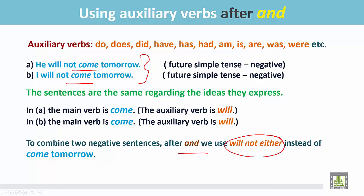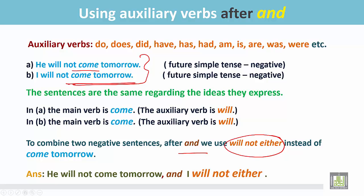To combine these two negative sentences, we use 'and,' and after 'and' we write 'will not either' instead of repeating 'come tomorrow.' The answer is: 'He will not come tomorrow,' then a comma and 'and,' and then we write only the subject followed by 'will not either' — we do not write the whole sentence again.